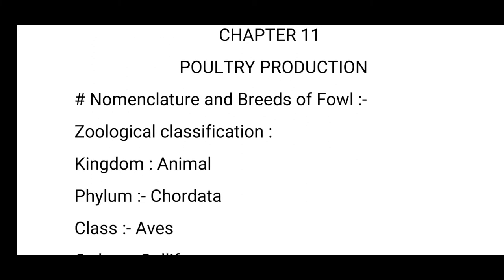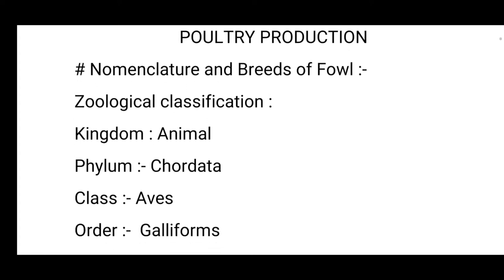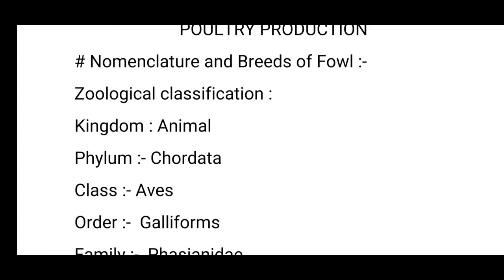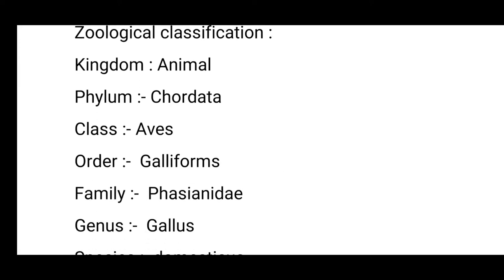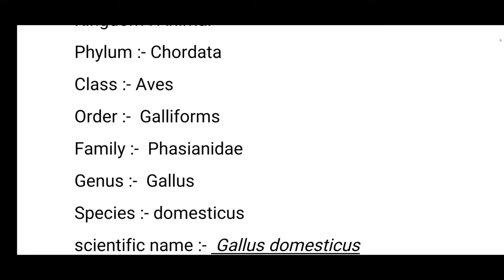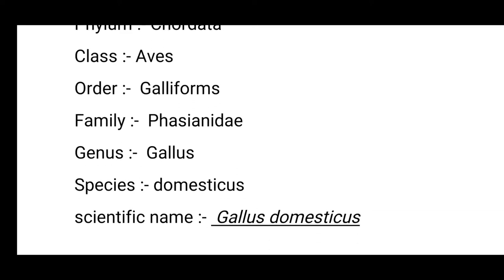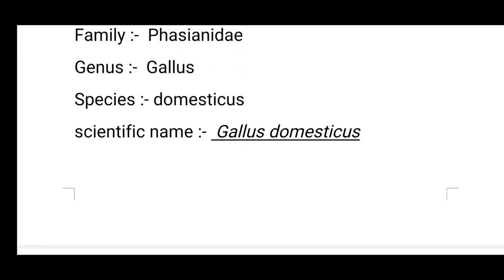Chapter 11 is poultry production. Our first topic is nomenclature and breeds of fowl. The zoological classification of fowl or poultry is: Kingdom - Animalia, Phylum - Chordata, Class - Aves, Order - Galliformes, Family - Phasianidae, Genus - Gallus, Species - domesticus. The scientific name is Gallus domesticus.